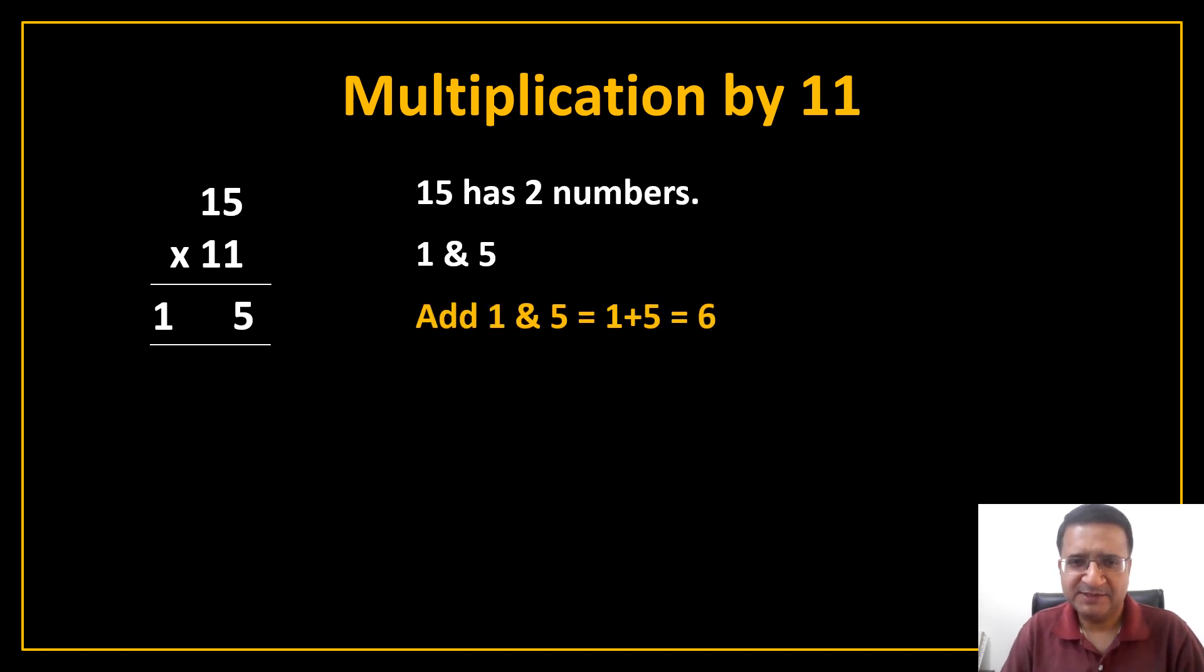What do you have to do here? Just add 1 and 5. You get 6. So add 6 here and you get your answer. It's very simple. So what you did? You have 2 numbers, 5 and 1. You just added them and inserted in the middle of 1 and 5 and you got your answer. See the beauty of Vedic maths.